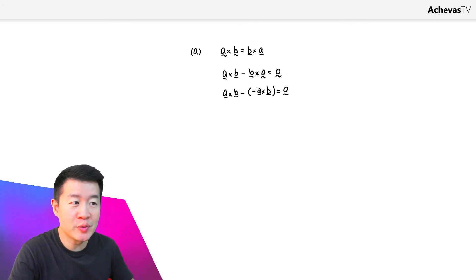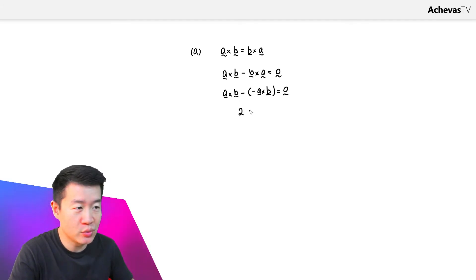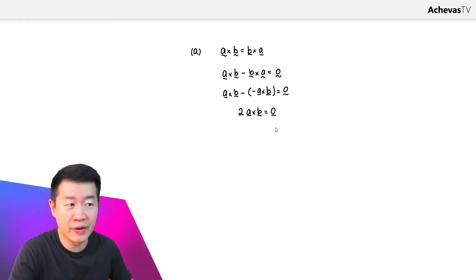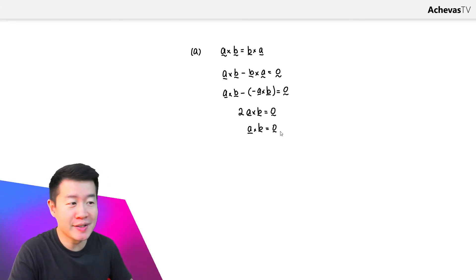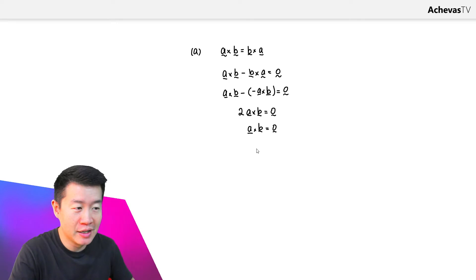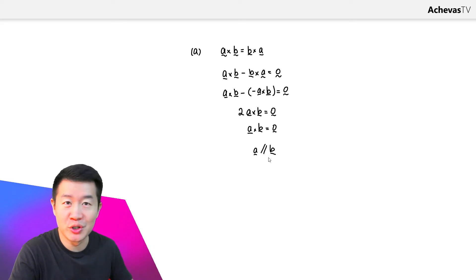So we have a cross b plus a cross b, which gives us two times a cross b equals a zero vector. This means that a cross b is a zero vector. If a cross b is a zero vector, this tells us that vector a and vector b must be parallel to each other.